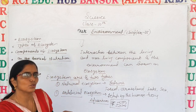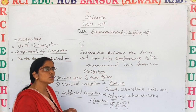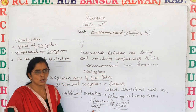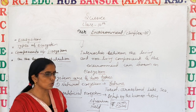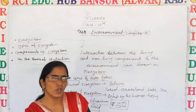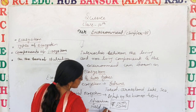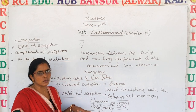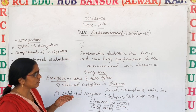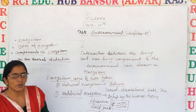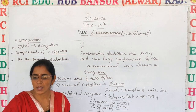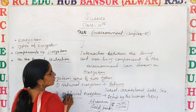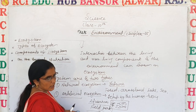Why is it artificial? Because we have made it. Another example is a crop field — farmers grow crops, and in that field there are rats, insects, soil, temperature, and other components. A park also has many living components and non-living components. These are some artificial and man-made ecosystems. So there are two types of ecosystems: natural ecosystem, which exists in nature already, and man-made or artificial ecosystem, which is made by humans.